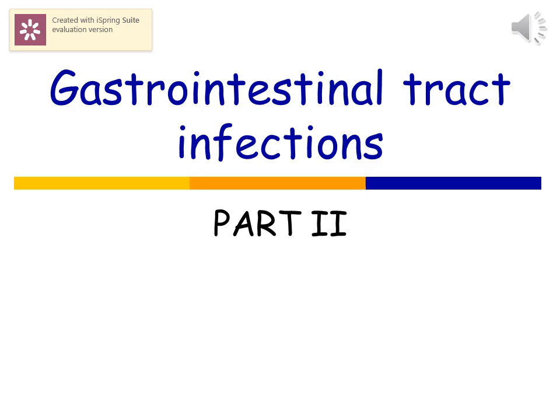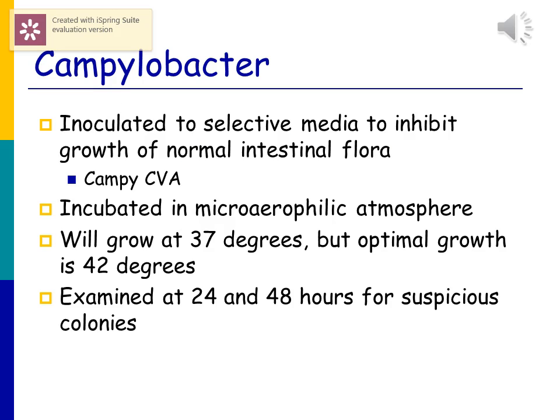For part two, we're going to start out by talking about Campylobacter. Campylobacter is a microaerophilic organism. It needs a specific blood-based agar with antibiotics to inhibit your normal intestinal flora so that Campylobacter will be allowed to grow. Without that specific media, your intestinal flora would overgrow and you'd never find the Campylobacter, because it takes a couple of days to grow up on a plate. It will grow in a regular 35 to 37 degree incubator as long as it's in its microaerophilic atmosphere.